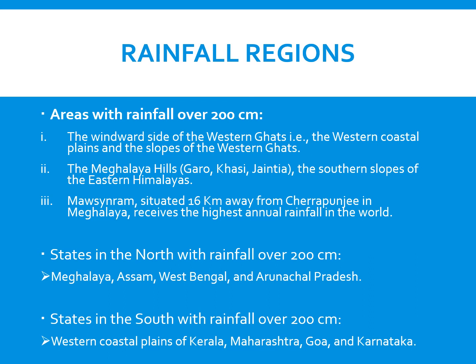Rainfall regions. India can be divided into four rainfall regions. First, the areas with rainfall over 200 cm, or the heavy rainfall region. This region experiences more than 200 cm of rainfall annually and includes the windward side of the Western Ghats — which includes the western coastal plains and the slopes of the Western Ghats — the Meghalaya hills including the Garo, Khasi and Jaintia hills, and the southern slopes of the eastern Himalayas. Mawsynram, situated 16 km away from Cherrapunji in Meghalaya, receives the highest annual rainfall in the world.